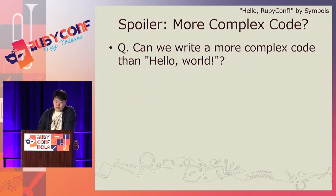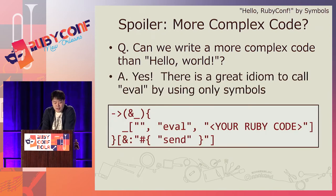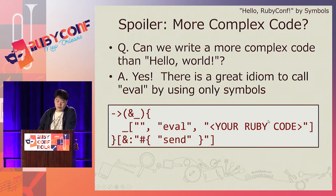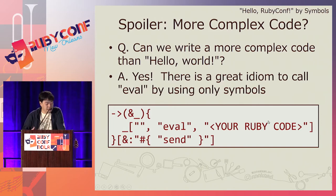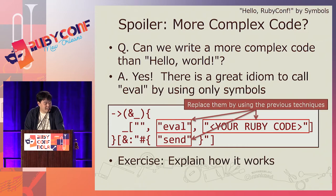This is slightly off-topic, but you may think: can we write more complex code than Hello World? The answer is yes. Surprisingly, a great idiom is known to call the eval method using only symbols. This idiom has some string letters, but we know the way to replace them with symbols. It's so great and interesting, but too difficult for me to explain how it works in English, so please analyze it yourself later.